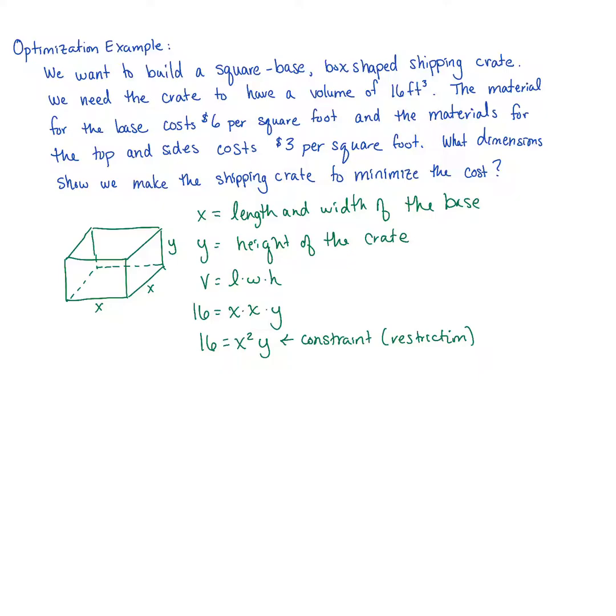Whatever dimensions we make for our length, width and height of this box, we need its volume to be 16. The material for the base costs $6 per square foot and the materials for the top and the sides cost $3 per square foot. What dimension should we make the shipping crate to minimize our cost?